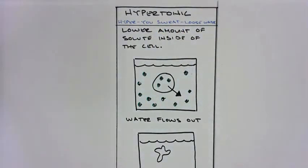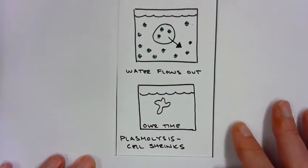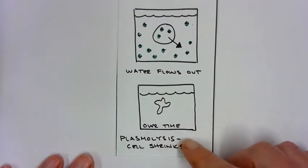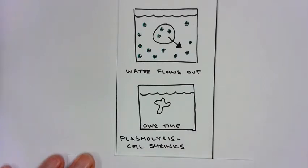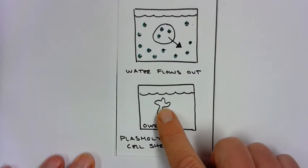Eventually, over time, our cell will flow out so much that it loses water, and it will shrink. This is called plasmolysis, and the cell shrinks. This is what happens if you drink salt water or large amounts of salt water. You become dehydrated, and your cells will shrink.